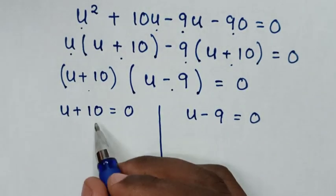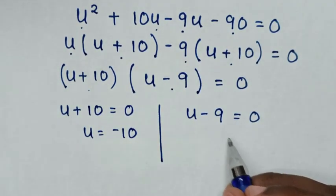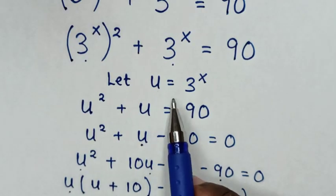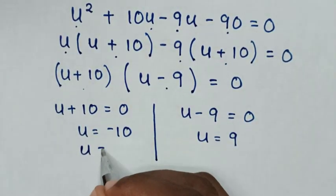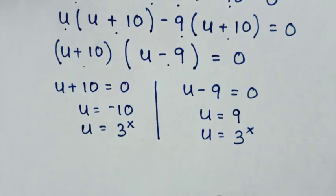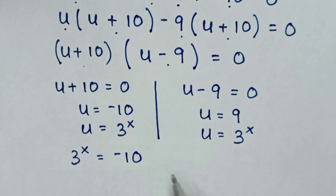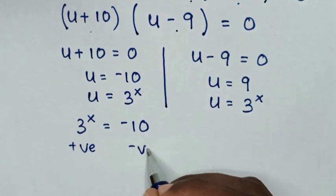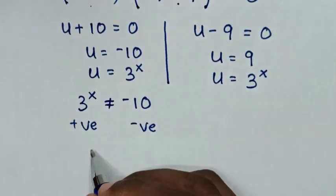From the first solution, we take 10 to the right side so u is equal to negative 10. We already let u equal to 3 power x, so substituting gives 3 power x equal to negative 10. But 3 to any power is always positive, and positive cannot equal negative, therefore this solution is rejected.